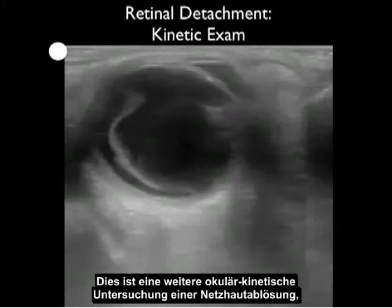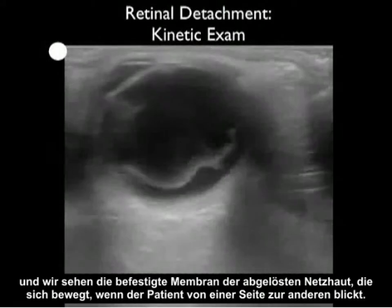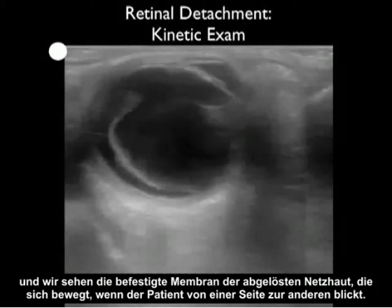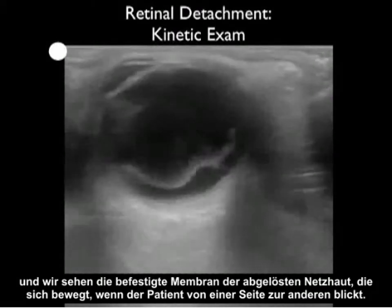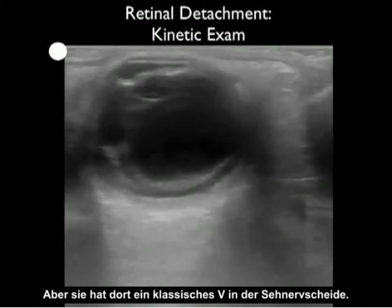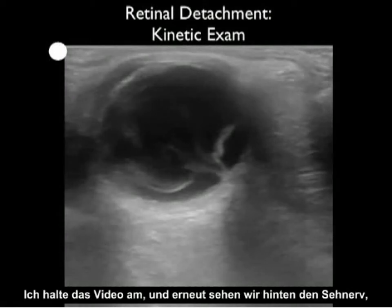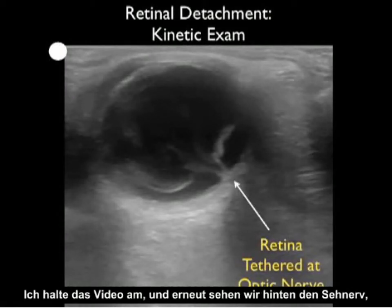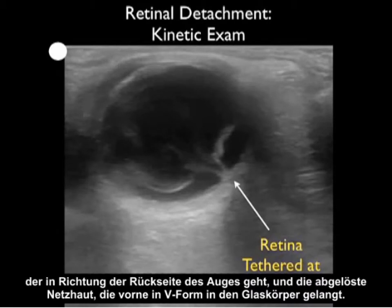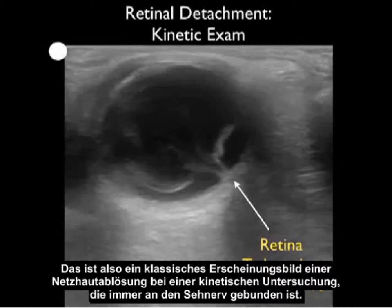Here's another ocular kinetic exam of a retinal detachment. We can see the tethered membrane appearance of the detached retina moving around as the patient looks from side to side, with a classic V that tethers in at the optic nerve sheath. Stilling that image, we can see the optic nerve posteriorly coming up towards the back of the eye, and the detached retina tethered right there to form a V coming anteriorly into the vitreous material — always tethered at the optic nerve.